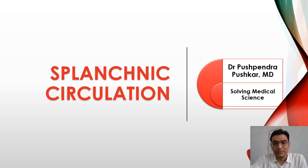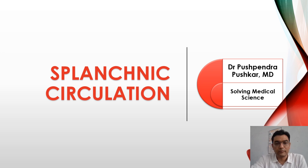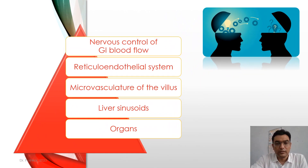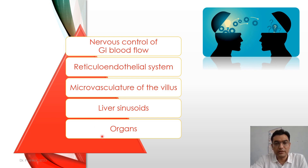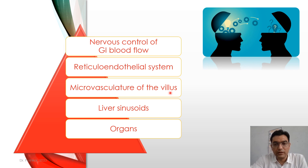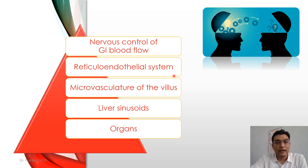Welcome to this lecture on splanchnic circulation. Today we are going to understand the organs involved in the splanchnic circulation, the liver sinusoids, the micro vasculature of the villus, the reticuloendothelial system, and the nervous control of GI blood flow.